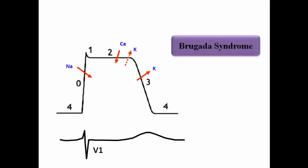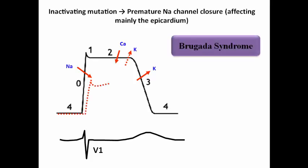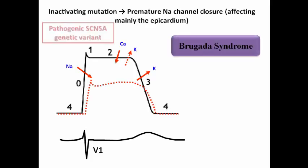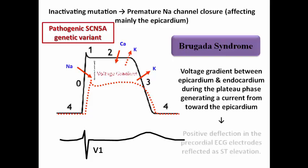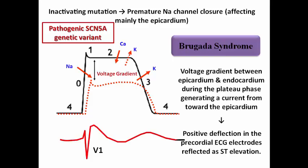In Brugada syndrome, there is an inactivating mutation in the sodium channel, resulting in premature sodium channel closures that affect mainly the epicardium. This results in a voltage gradient between the epicardium and endocardium during the plateau phase, generating an electrical current directed towards the epicardium, reflected as a positive deflection in the precordial ECG electrodes.